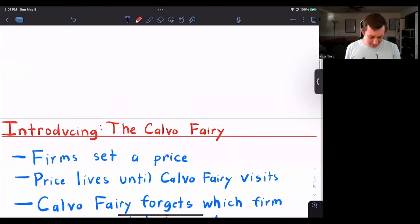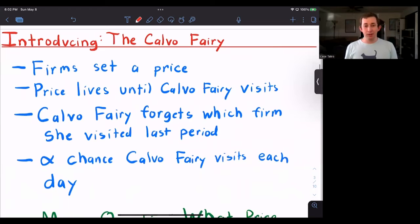So what in the world is a Calvo Fairy? Well, the Calvo Fairy is part of the Calvo model and it says that a firm sets a price and a firm has to set a constant price for every period. When can a firm change a price?